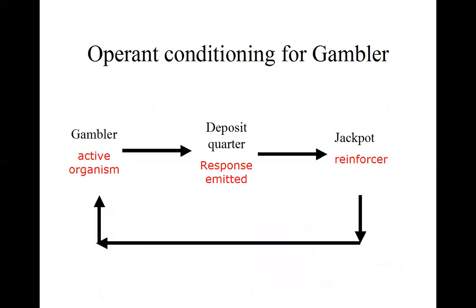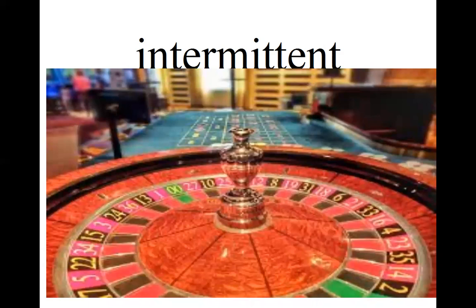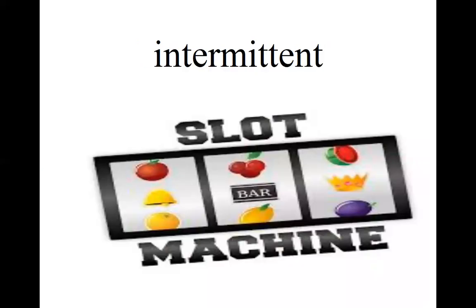Another example of intermittent reinforcement would be a gambler who makes a response of depositing a quarter, making a bet, and the payoff would be the reinforcement of a jackpot. This is true whether the gambler uses the crap table or card table, the roulette wheel, or the old slot machine. We never know when the jackpot is coming — it's intermittent and unpredictable.